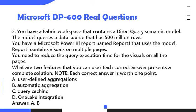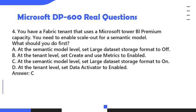Question 4. You have a Fabric tenant that uses a Microsoft Power BI premium capacity. You need to enable scale-out for a semantic model. What should you do first? A. At the semantic model level, set large dataset storage format to off. B. At the tenant level, set create and use metrics to enabled. C. At the semantic model level, set large dataset storage format to on. D. At the tenant level, set data activator to enabled. Answer: C.